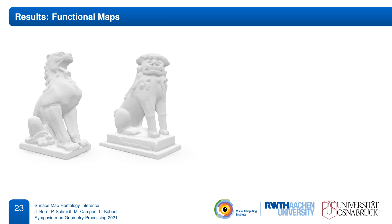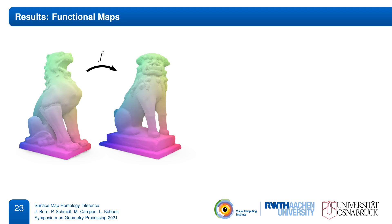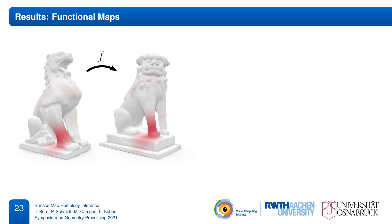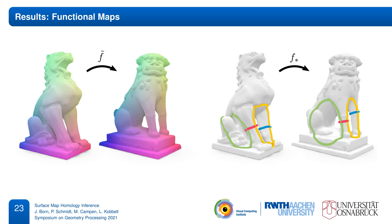Our method is easily adapted to other map representations. We directly support any type of map that can be used to transport scalar fields from one mesh to the other, such as functional maps. The fact that functional maps are fuzzy and can only map very smooth signals is not an issue due to our inference in the cohomology setting.